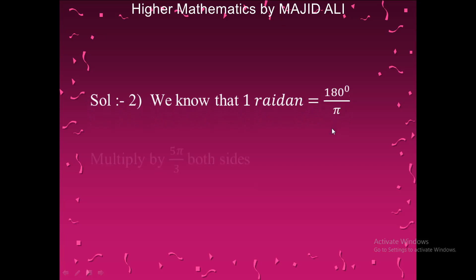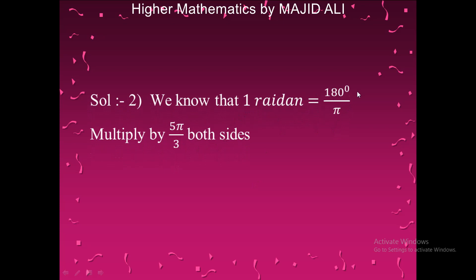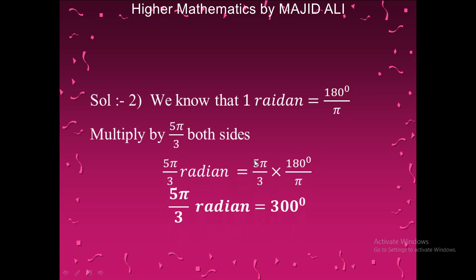Second part of Example 7: Convert 5π/3 radians to degrees. Multiplying 5π/3 by 180/π, cancelling π with π and 3 into 180 (giving 60), we get 5 × 60 = 300 degrees. Therefore, 5π/3 radians equals 300 degrees.